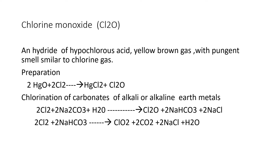One more method: Preparation by Chlorination of Carbonates of Alkali and Alkaline Earth metals. Alkali metals are nothing but Sodium, Potassium. Alkaline Earth metals include Calcium, Magnesium, etc. Here you can use the Alkali and Alkaline Earth metal Carbonates and Bicarbonates. When two Chlorine molecules are combining with two moles of Sodium Carbonate in aqueous solution, you will get Chlorine Monoxide, Sodium Bicarbonate, and NaCl.